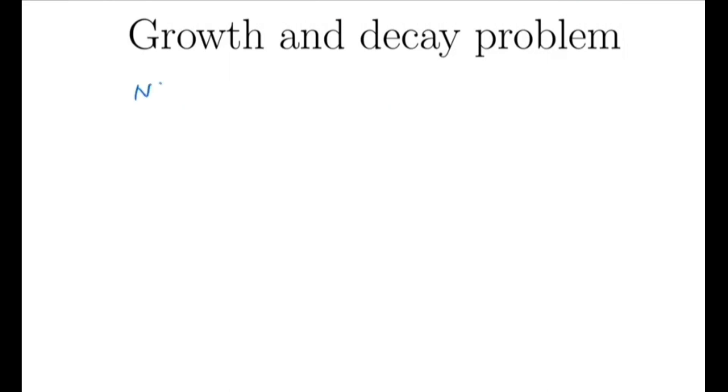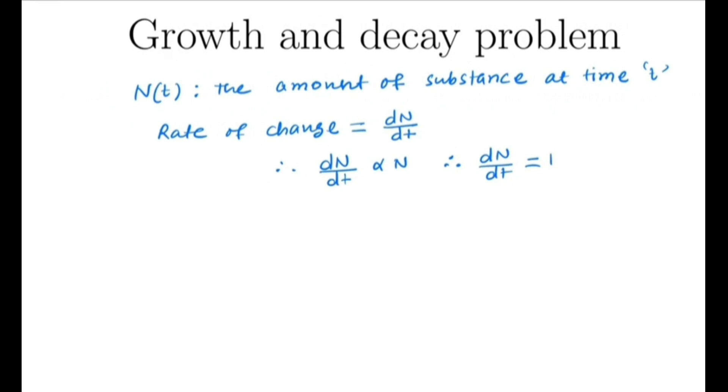Let N(t) denote the amount of substance at time t. Then, what will be the rate of change? The rate of change will be dN/dt. It is given that this rate of change is directly proportional to the amount of substance, so we have dN/dt is proportional to N.